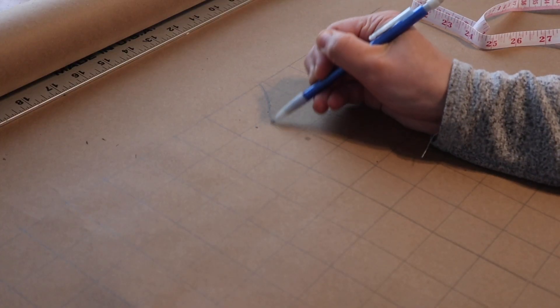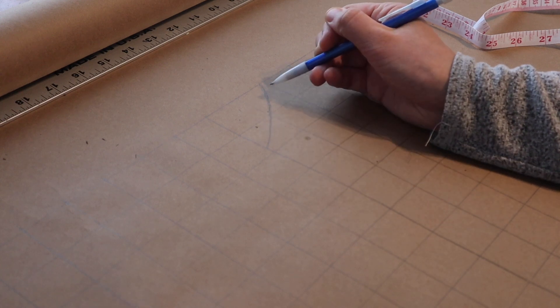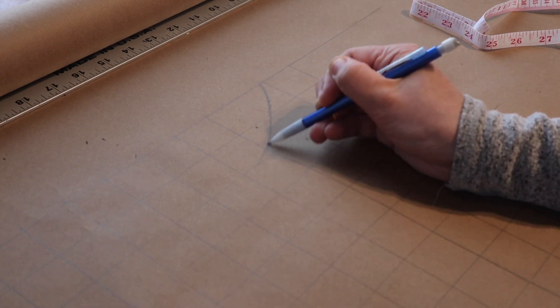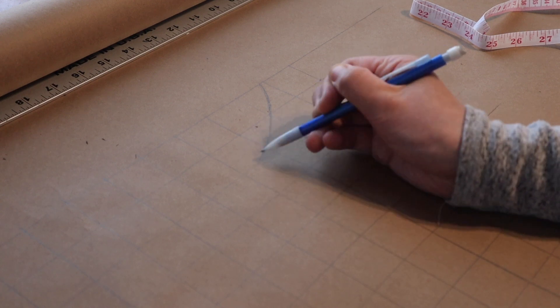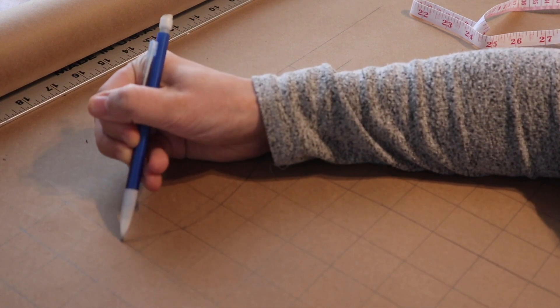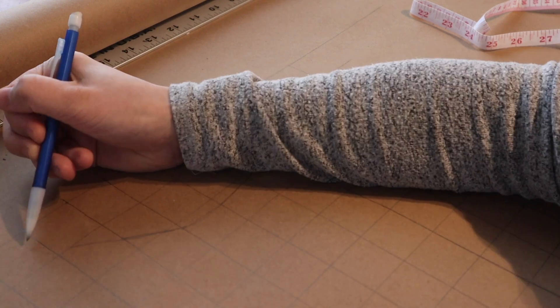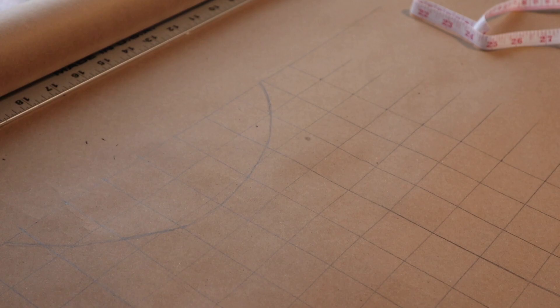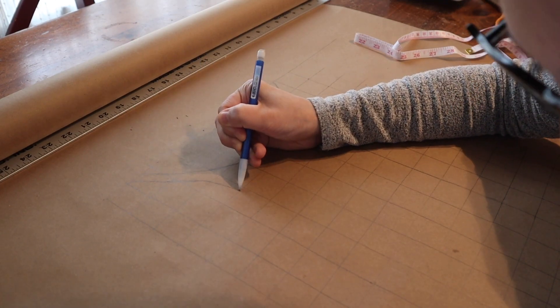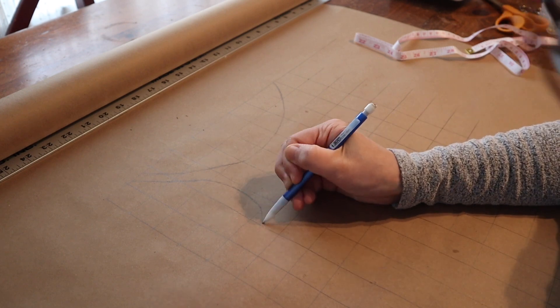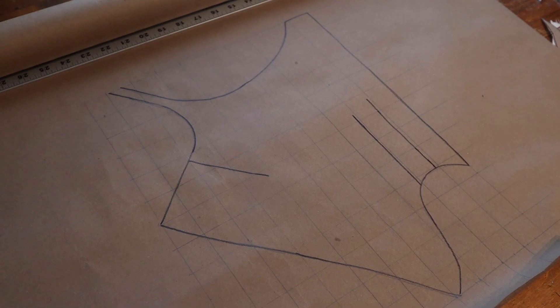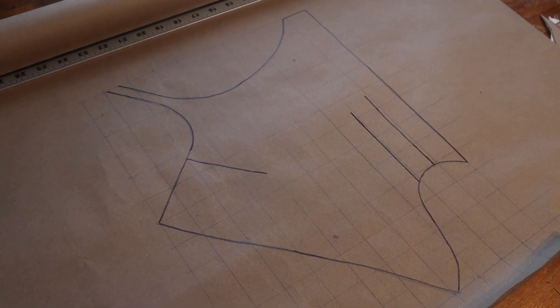Once my grid was complete, I drew the pattern in square by square, copying what I saw on the pattern to the corresponding square on my grid. And with that, I have a finished scaled-up pattern.